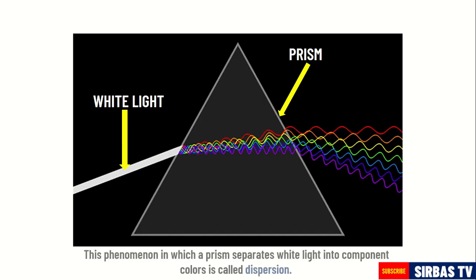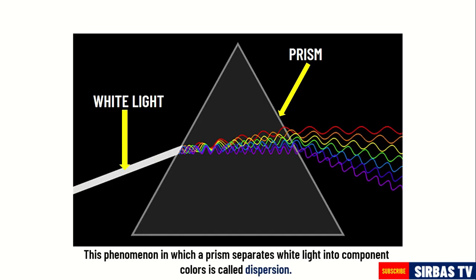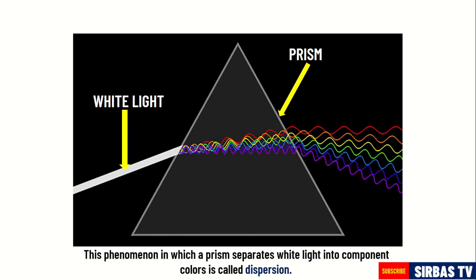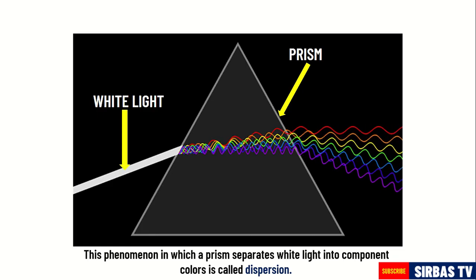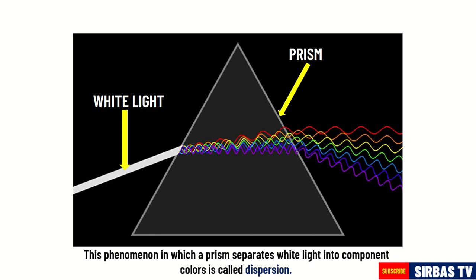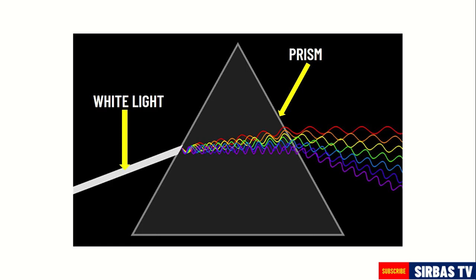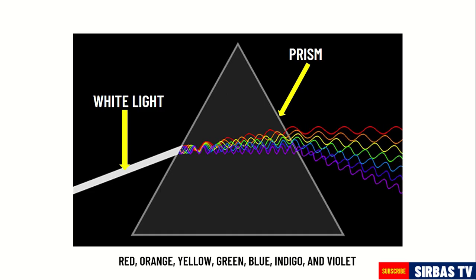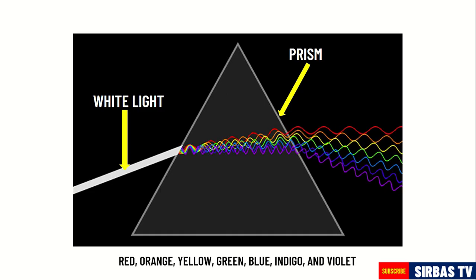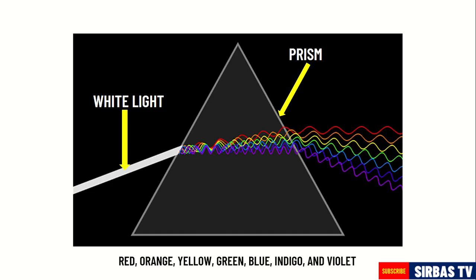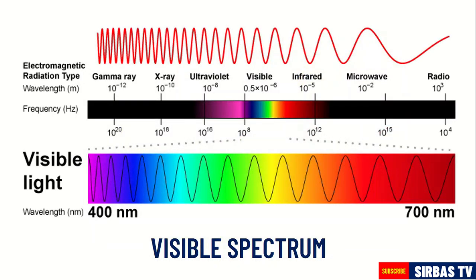When white light strikes a prism, it splits into visible light colors in the electromagnetic spectrum. This phenomenon, in which a prism separates white light into component colors, is called dispersion. The component colors of white light include red, orange, yellow, green, blue, indigo, and violet. These component colors are arranged according to decreasing frequency in the visible light spectrum.